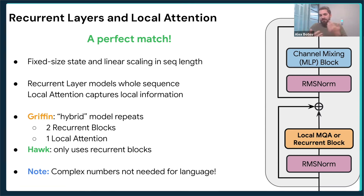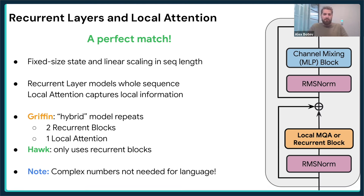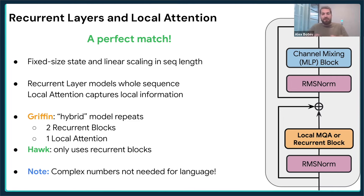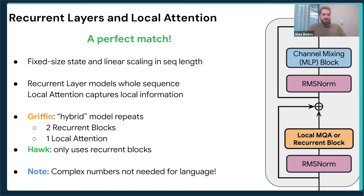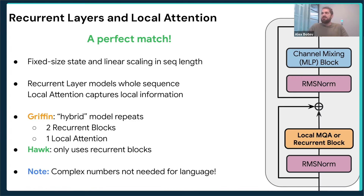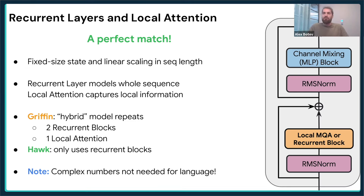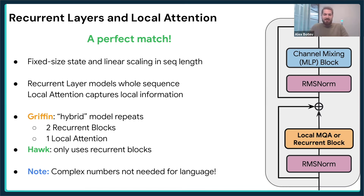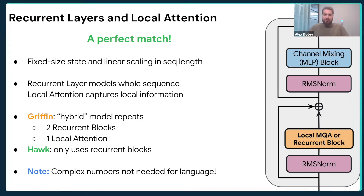We also published results for the pure RNN model, which we named Hawk. On language, we find that complex numbers are not needed in the linear recurrence — real numbers achieve the same result. One takeaway is that for modeling language, you potentially don't need very strong modeling of interactions between different tokens; something much simpler suffices.